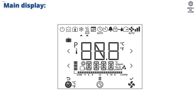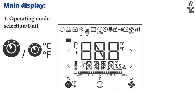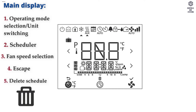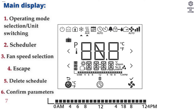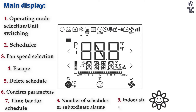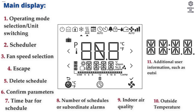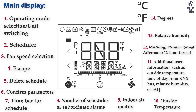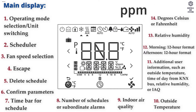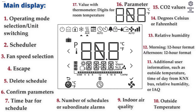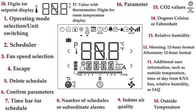Main Display elements: 1 — Operating Mode Selection and Unit Switching; 2 — Scheduler; 3 — Fan Speed Selection; 4 — Escape; 5 — Delete Schedule; 6 — Confirm Parameters; 7 — Time Bar for Schedule; 8 — Number of Schedules or Subordinate Alarms; 9 — Indoor Air Quality; 10 — Outside Temperature; 11 — Additional User Information; 12 — Morning/Afternoon in 12-Hour Format; 13 — Relative Humidity; 14 — Degrees Celsius or Fahrenheit; 15 — CO2 Values; 16 — Parameter; 17 — Value with Thermometer, Digits for Room Temperature Display; 18 — Digits for Set Point Display.